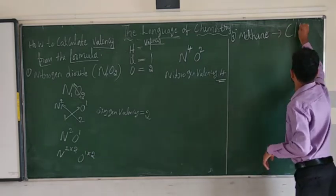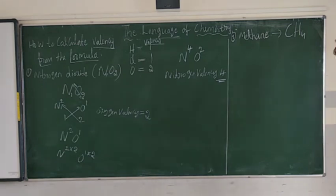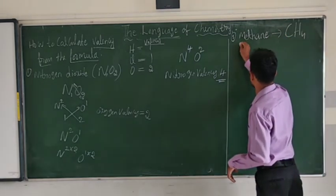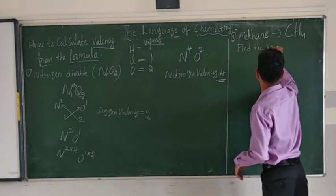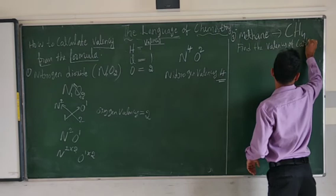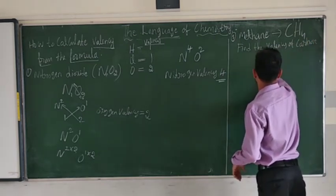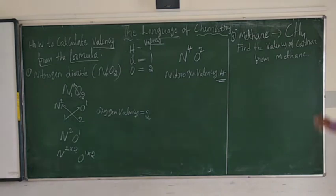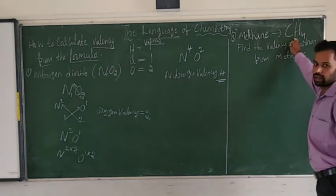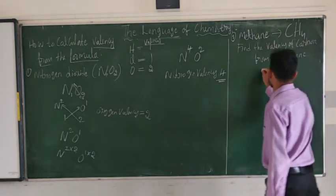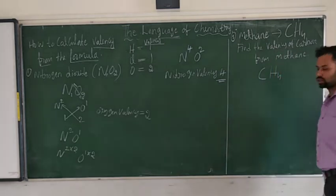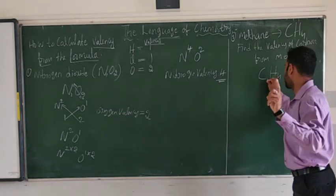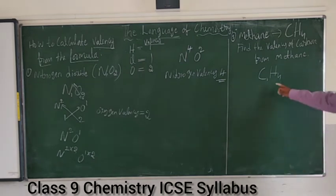Now another problem: CS4, which is the chemical formula of methane. From CS4, how to calculate the valency of carbon? Write the formula CS4. These numbers are called subscripts. No number written means its value is 1.